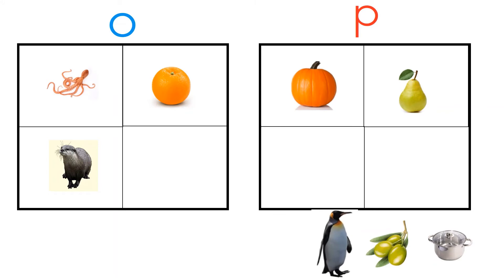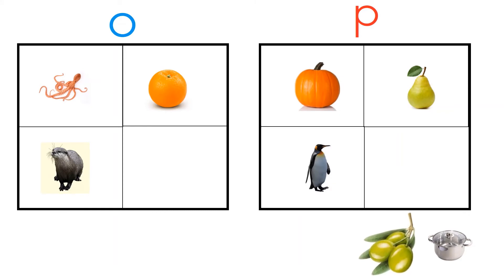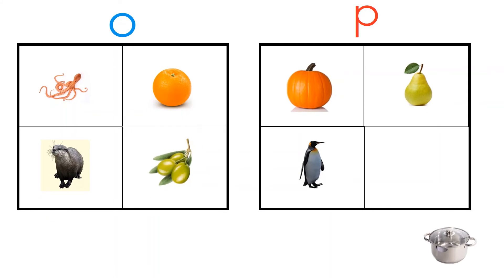P, penguin, penguin goes under P. O, olives, olives goes under O. P, pot, pot. Are you done sorting all your pictures?